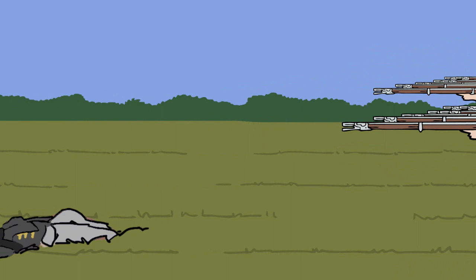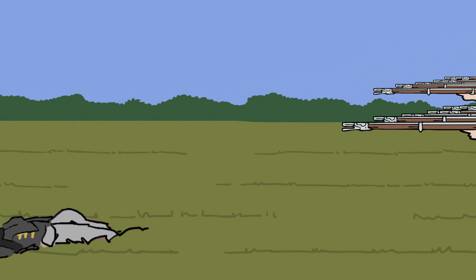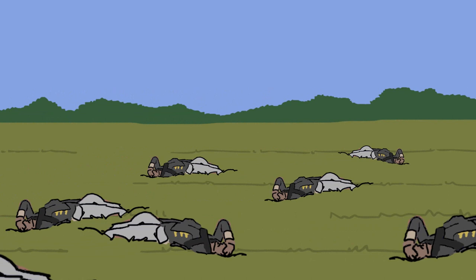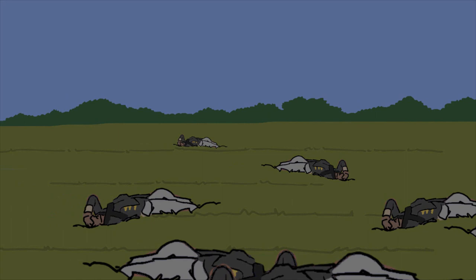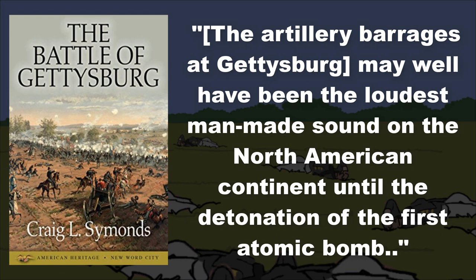The Confederates took over 6,000 casualties. The range and accuracy of rifled muskets ensured that Lee's men would begin suffering heavily well before they reached northern lines, and even before it began, the Confederates were being subjected to extensive Union bombardment. Artillery played such a considerable role that, according to Craig Simmons in his book 'The Battle of Gettysburg,' the artillery barrages at Gettysburg may well have been the loudest man-made sound on the North American continent until the detonation of the first atomic bomb.